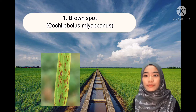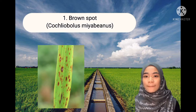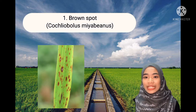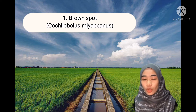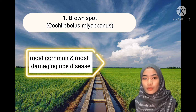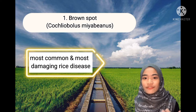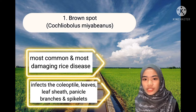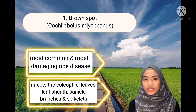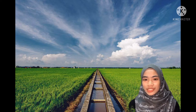The first disease is brown spot of rice. Brown spot has been historically largely ignored as one of the common plants and nose-damaging rice diseases. Brown spot is a fungal disease that impacts the coleoptile, leaf, leaf sheaths, panicle branches, glumes, and spikelets.